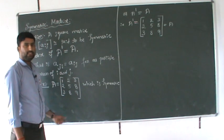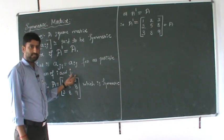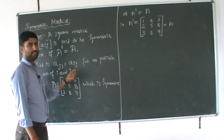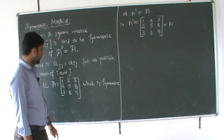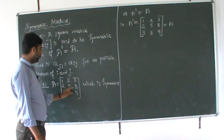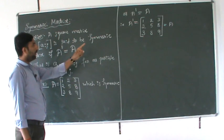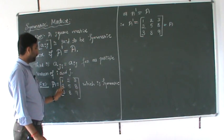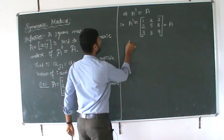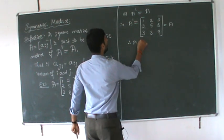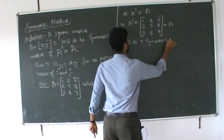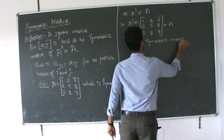What is a symmetric matrix? Symmetric matrix: it should be a square matrix in which A dash is equal to A. A dash is equal to A means we say it is symmetric. Taking the example A = [1, 2, 3; 2, 5, 8; 3, 8, 9], A dash equals A, therefore A is a symmetric matrix.